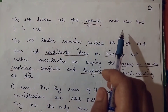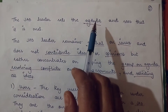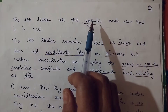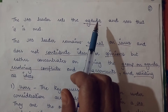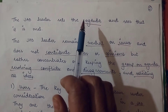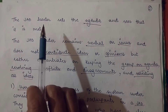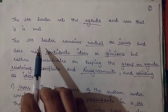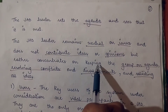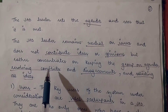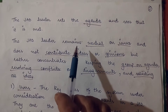The JAD leader sets the agenda and ensures it is met. For any meeting, the agenda must be decided in advance so the purpose of the meeting is clear, and during the meeting it is important to stick to that agenda. The JAD leader sets the agenda and also ensures it is met by the end of the session.